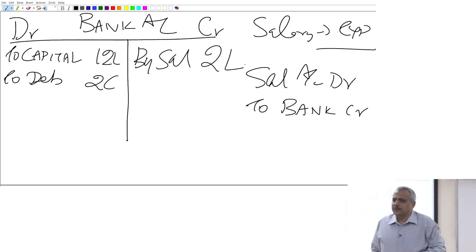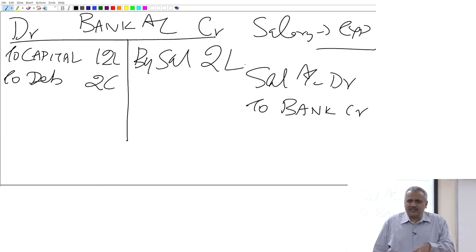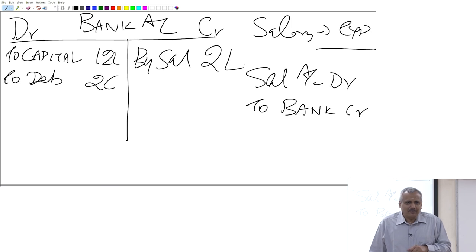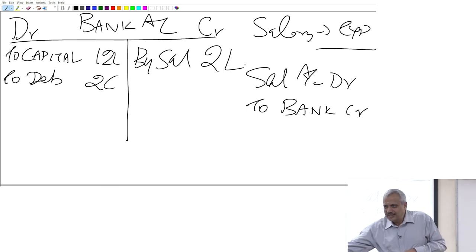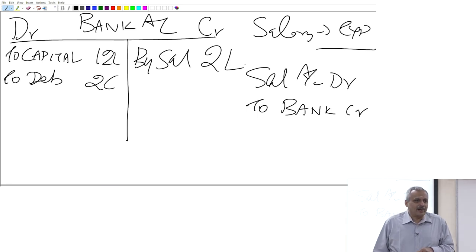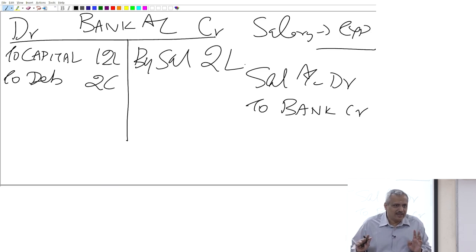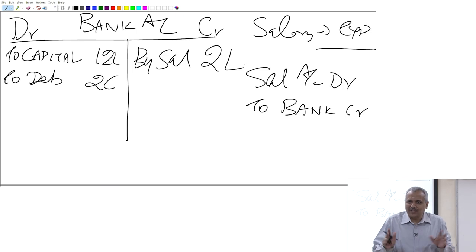Each item has a separate ledger account. At any point in time, if I need to know the balance, I add the debit side and credit side and get the balance. For example, sales account can never have a debit balance — because in a sale, goods are going out, they cannot come in. So sales account will always have a credit balance. Purchases will always have a debit balance — goods always coming in, it can never have a credit balance.